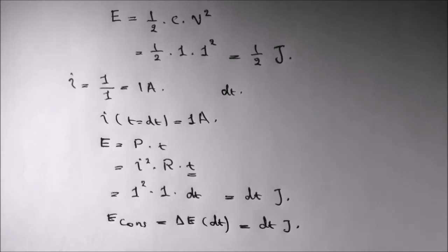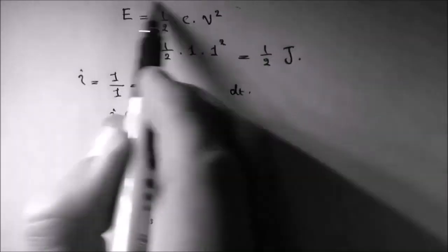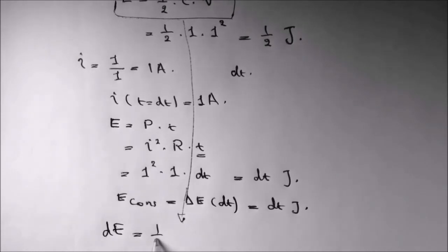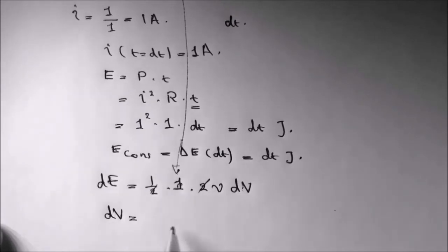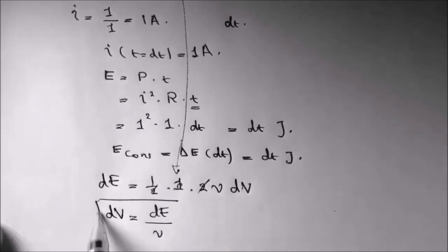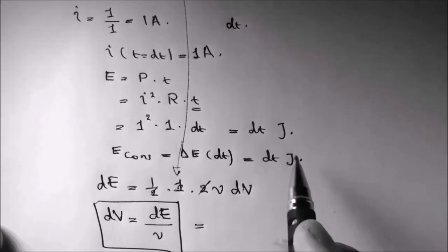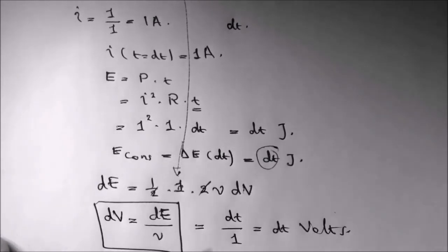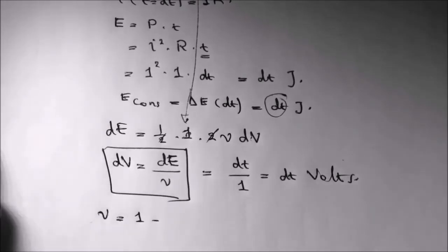Now, what is the change of voltage after this consumption of energy? We already have that energy equals 0.5 times C times V squared, so we can differentiate this equation. We get dE equals 0.5 times C, which is 1 farad, times 2V dV. So the final result: dV equals dE over V. The change in voltage is found by dividing the change in energy by the original voltage. The change in energy is dt joules, and the original voltage was 1 volt, so we have a change in voltage of dt volts. The new voltage after this moment will be V equals 1 volt minus dt volts.